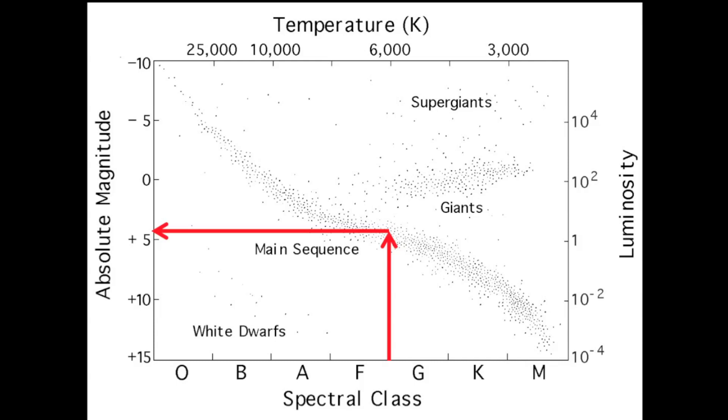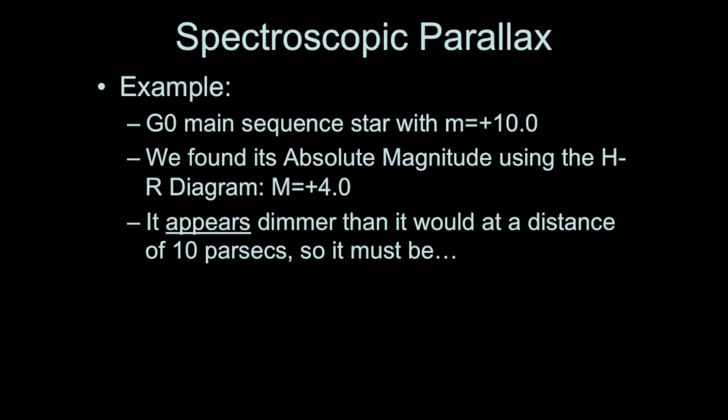If we compare the absolute magnitude of positive 4 to the apparent magnitude of positive 10, we can find that the distance must be more than 10 parsecs. This is similar to a technique we talked about before comparing the apparent and the absolute magnitude, because absolute magnitude is how bright the star would appear if it's 10 parsecs away. For this example, we have a G0 type star. If it were 10 parsecs away, it would appear positive 4. But it actually appears positive 10, which means it's farther than 10 parsecs.